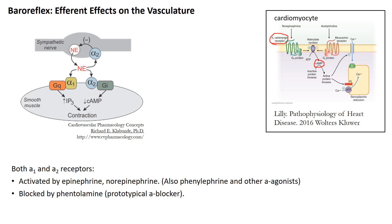Throughout most of the body — not the heart — alpha-mediated constriction dominates. That constriction can be activated by neurotransmission from a neuromuscular junction or from circulating epinephrine or norepinephrine. So alpha receptors on the smooth muscle cause constriction. What would an alpha blocker like phentolamine do? Alpha blockers block constriction — alpha blockers are vasodilators.